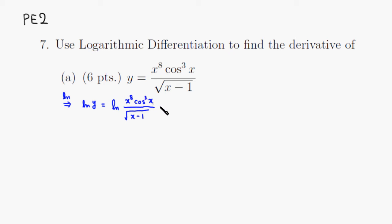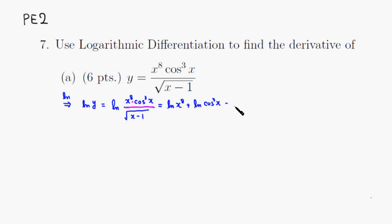Since we have convenient log properties, when you have a multiplication you can split it as addition. So we have the natural log of x cubed, then multiplication becomes addition, giving us the natural log of cosine cubed of x. And if you have a division it becomes subtraction, so you subtract the natural log of the square root of x minus 1.